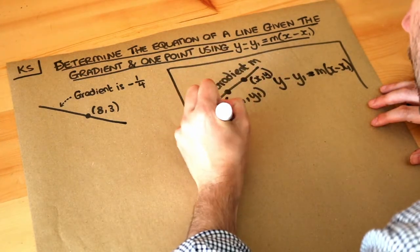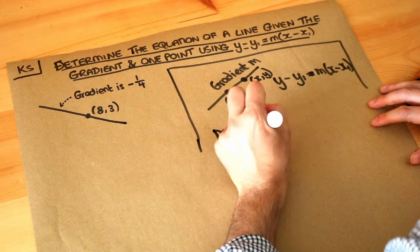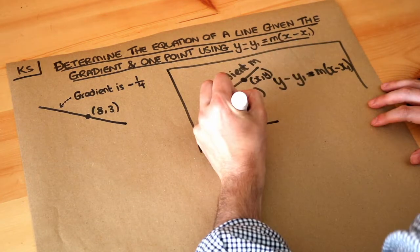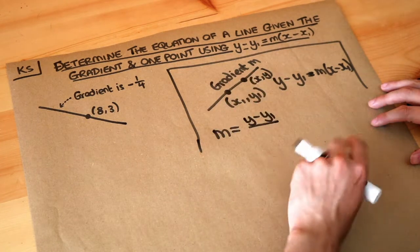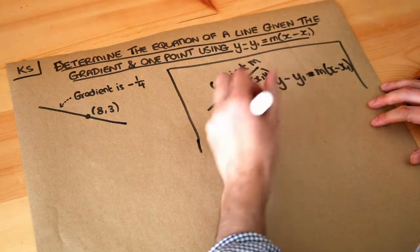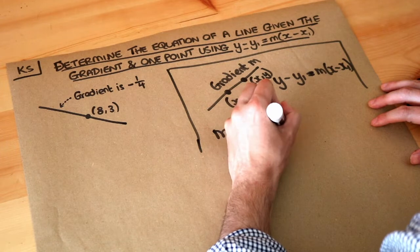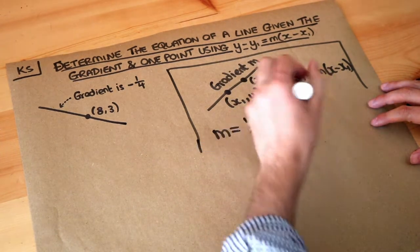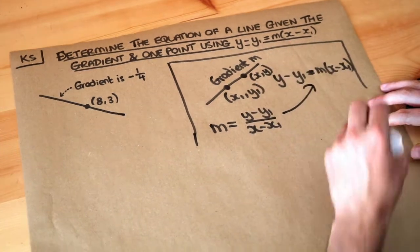Well, we know the gradient m is equal to the change in y over the change in x. Well, the change in y is y minus y1 and the change in x is x minus x1, and then if you just multiply through by the x minus x1, that gives you this formula here.